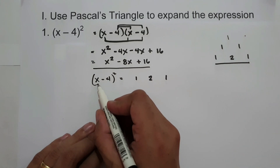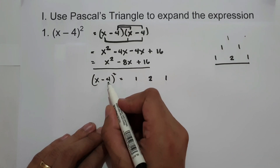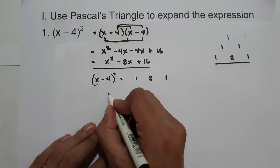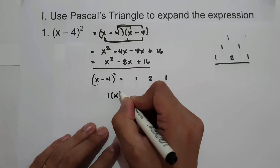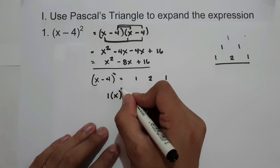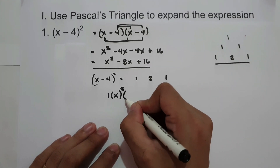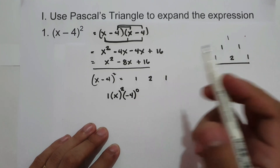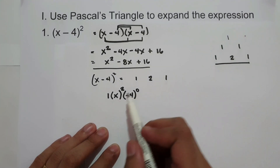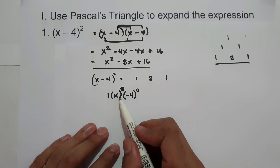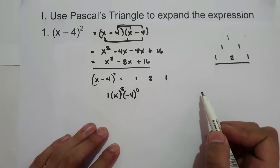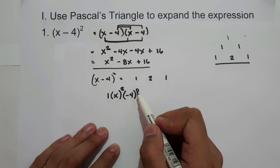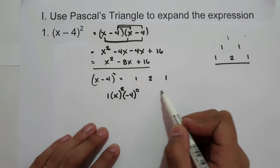So x will be the first term and negative 4 will be the second term. Using the first coefficient, which is 1, multiplied by x raised to the highest exponent, which is 2, and then negative 4 raised to the lowest exponent, which is 0. Always remember: the first term is raised from highest to lowest exponent, and the second term is raised from lowest exponent up to highest exponent.